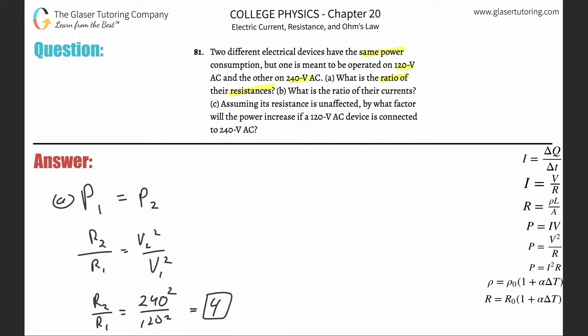Let's look at letter B: What is the ratio of their currents? Same thing—power one is equal to power two. Now I've got to think about how these two are related. I can use P is equal to IV, so this would be I1 V1 is equal to I2 V2.